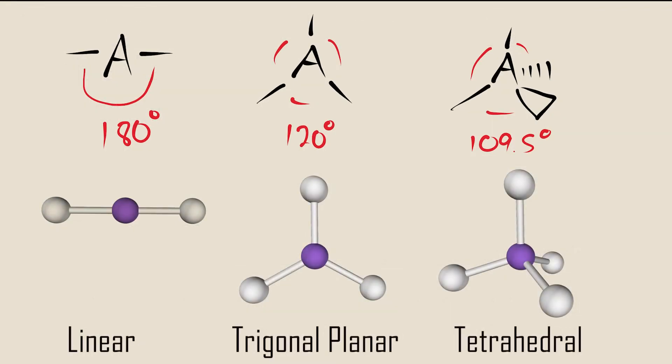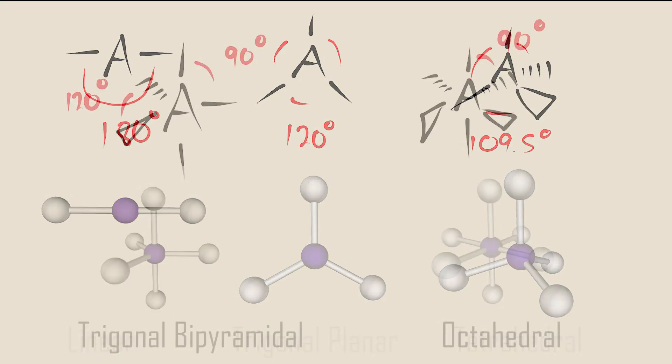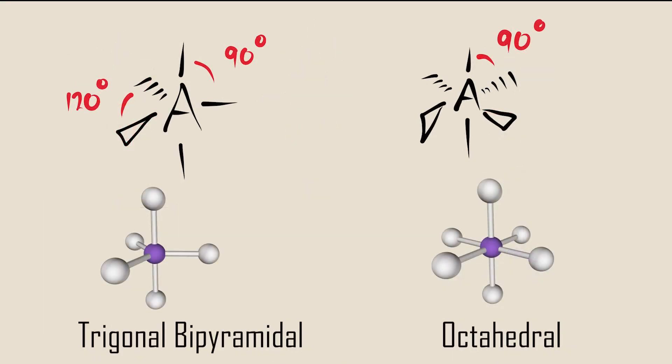There are five geometric patterns that arise when two to six groups arrange around a central atom. Three are shown on this slide and two on the following slide. You must familiarize yourself with the names, shapes, and ideal bond angles of these geometric patterns.